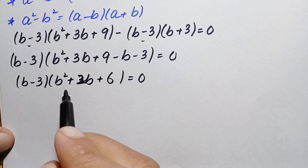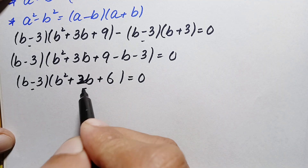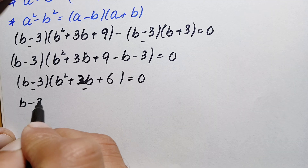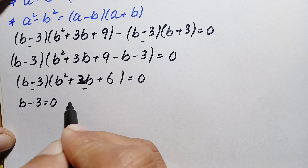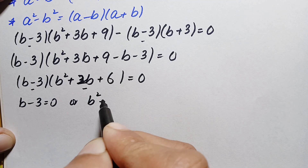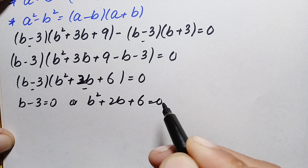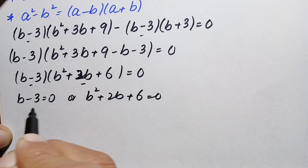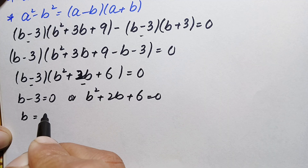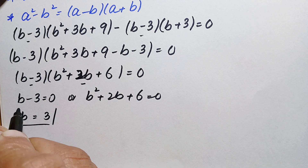The product of these two expressions is zero, so either b minus 3 equals 0 or b squared plus 2b plus 6 equals 0. From the first equation, b minus 3 equals 0 gives b equals 3. This is the first real value of b.